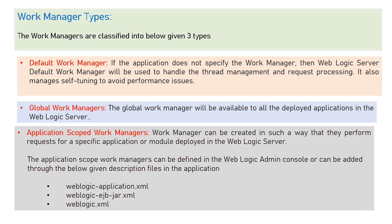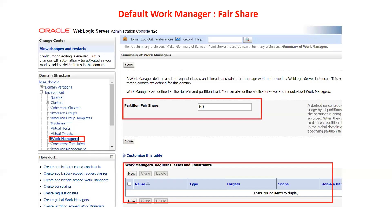Application scope Work Manager means you have multiple applications with different thread demands, so you create a Work Manager per application. All these configurations are defined in the weblogic-application.xml file, weblogic-ejb-jar.xml file, and weblogic.xml file. These are the different application descriptor files for your WAR application, JAR application, and EAR application, where you can define different Work Manager configurations.